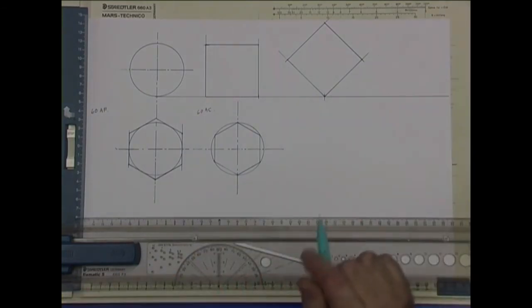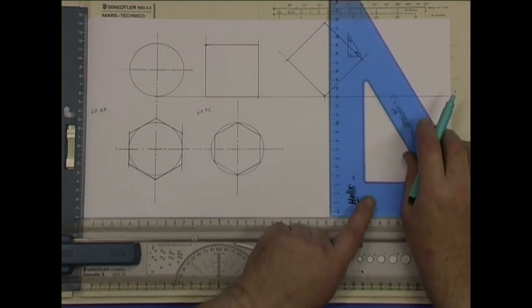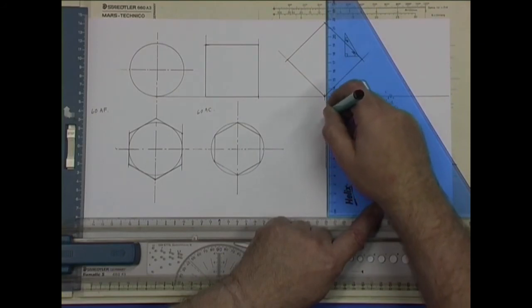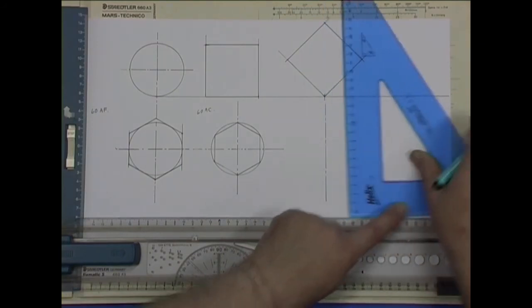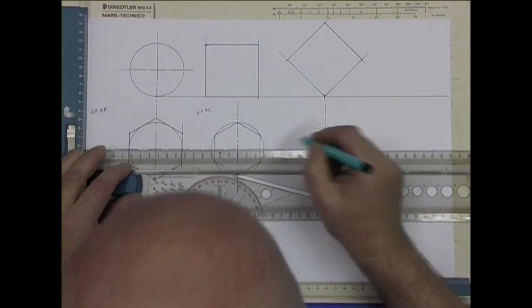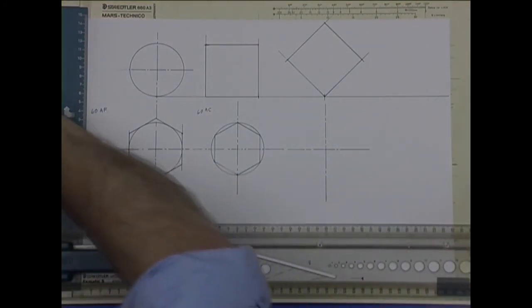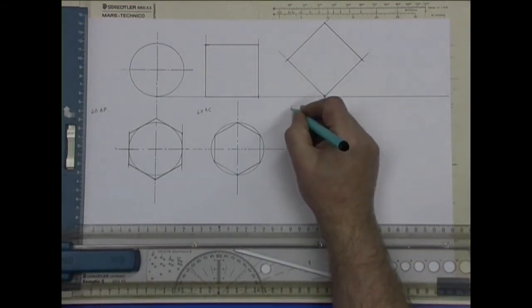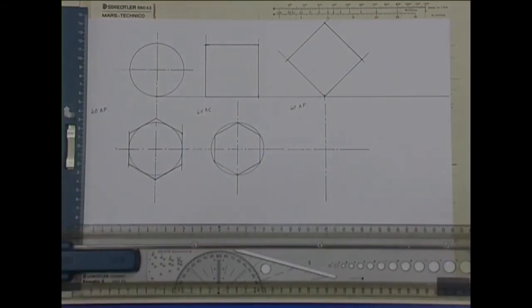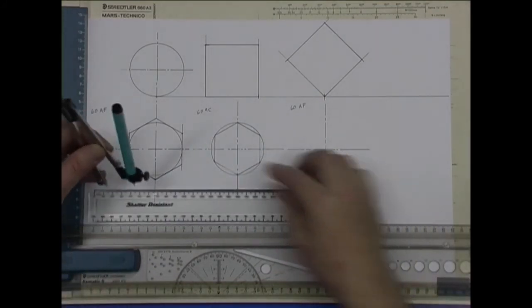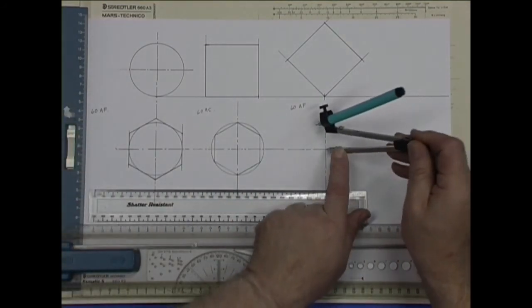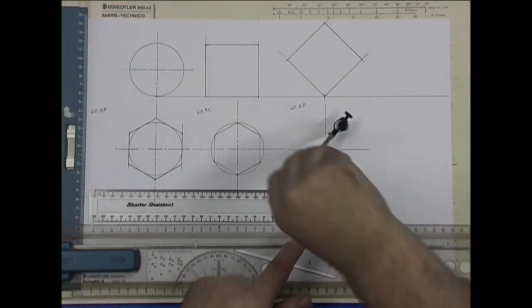We'll jump now up to the octagon. Now octagon is an eight sided figure. We'll start off with a center line. And the octagon we'll say 60 across the flats. We'll set a compass at 30 and winding the hand back so it's as far as it can go.